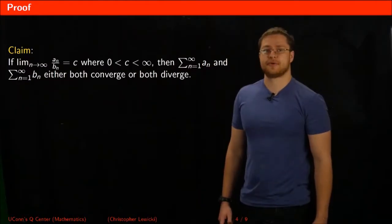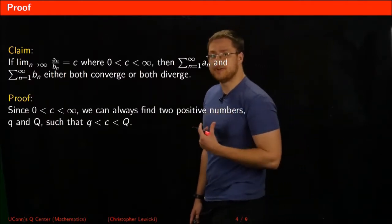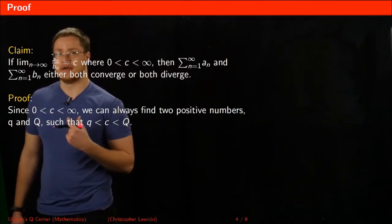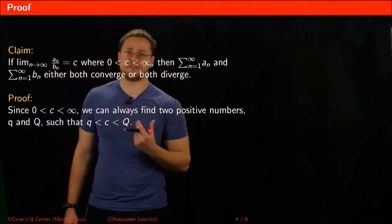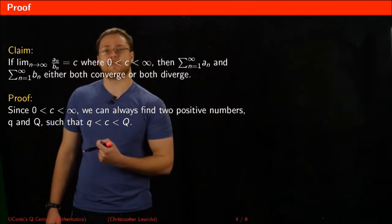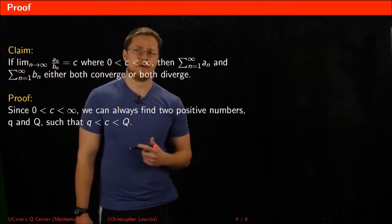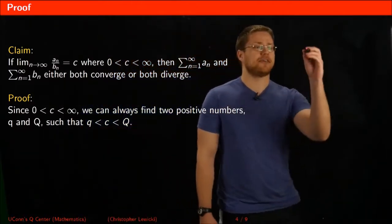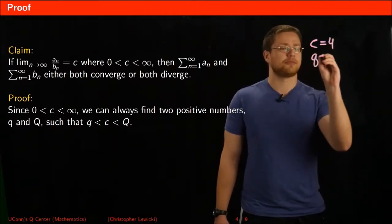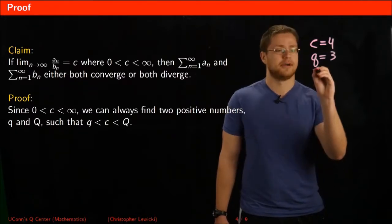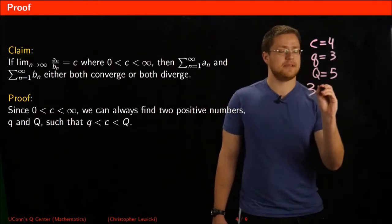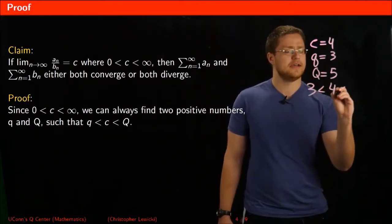This is the claim we need to prove. Since we know that c is some positive number sandwiched between 0 and infinity, we could always choose two other positive numbers — call them lowercase q and capital Q — such that we sandwich c between them. For example, if our c value is 4, we could choose 3 as a number smaller than 4 and 5 as a number larger than 4, sandwiching c between them.